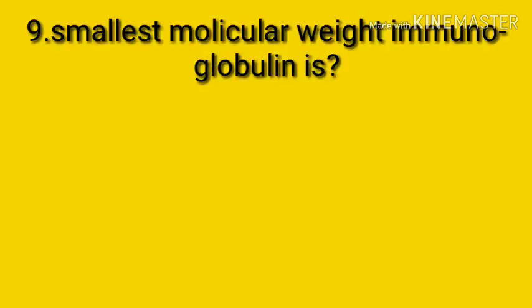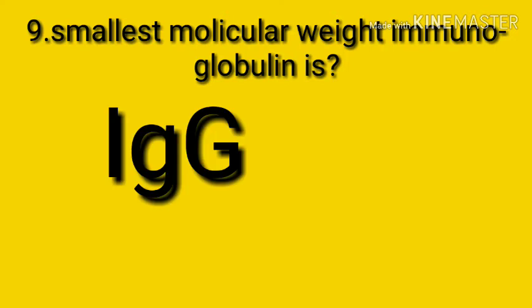Question number nine: the smallest molecular weight immunoglobulin is? The answer is immunoglobulin G. Immunoglobulin G is the smallest molecular weight immunoglobulin, which is why it is the only immunoglobulin that crosses the placenta.